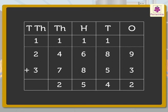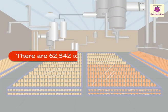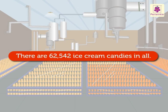Finally, add the numbers in the ten thousands column: 1, 2 and 3. We get 6, which we write in the ten thousands column. Hence, we get the number 62,542. We say the sum of 24,689 and 37,853 is 62,542. Thus, there are 62,542 ice cream candies in all.